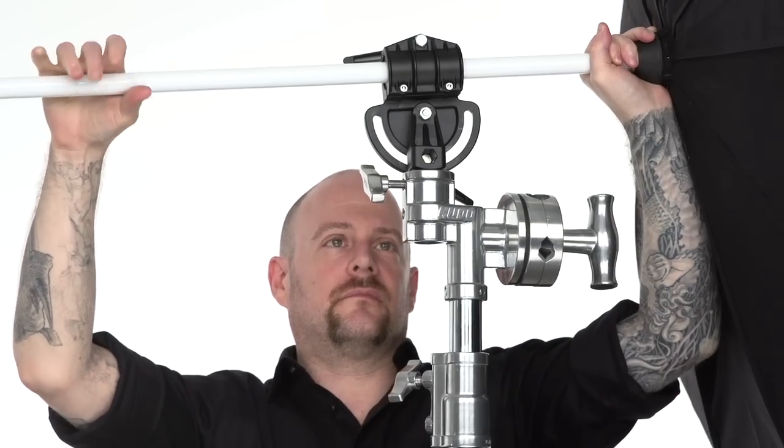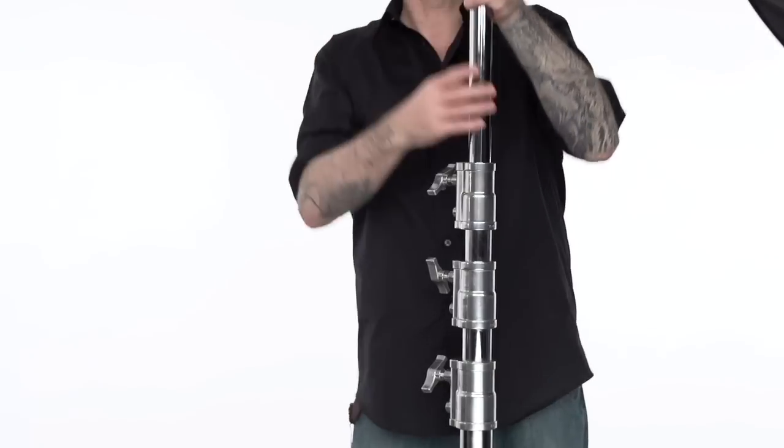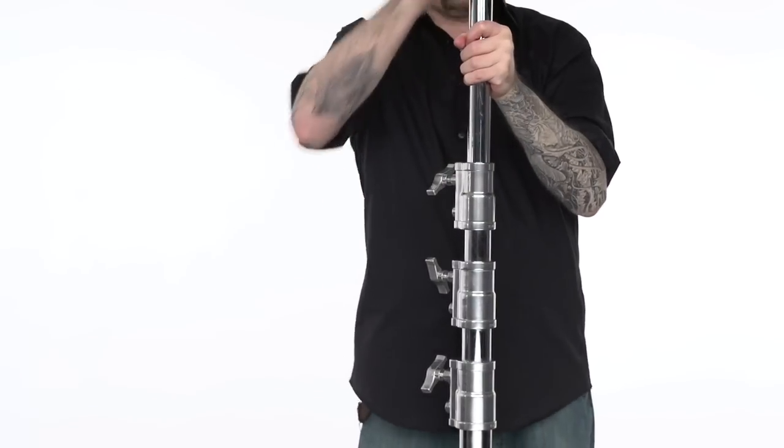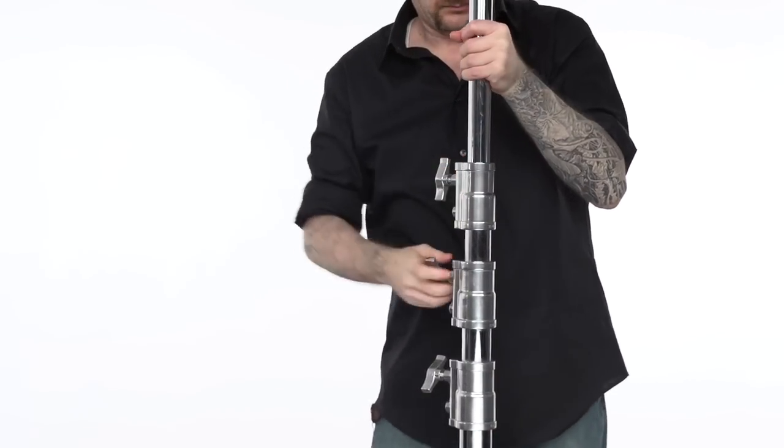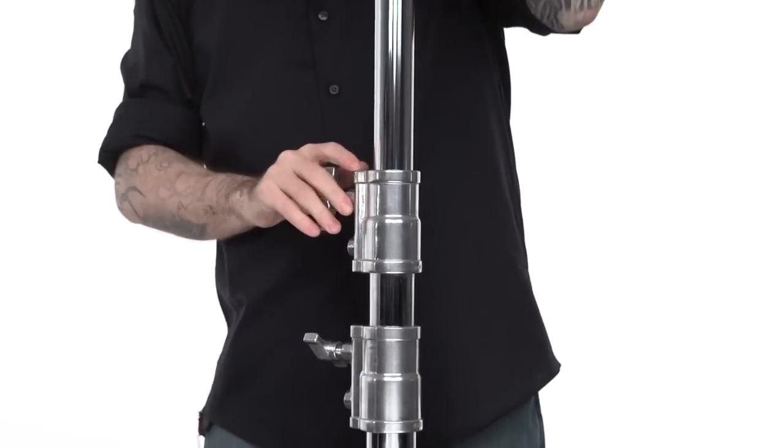We're now ready to mount our light fixture. To adjust the height of your stand, loosen the knob on the top of the second riser section. Make sure you always keep a firm grip on the riser section to support the load. Adjust to the desired height and tighten the knob until snug.